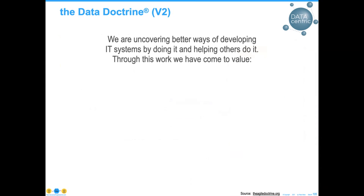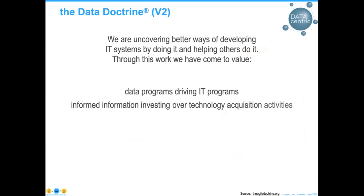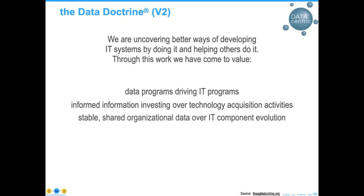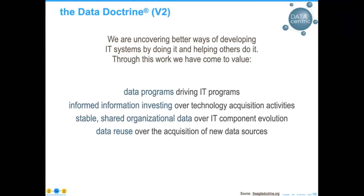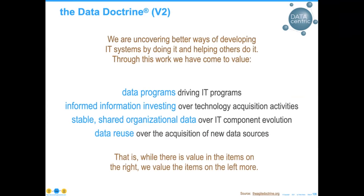When people say 'data first,' they need something that will give them some ideas. I've been working on a piece trademarked with the Patent and Trade Office — a variation of the Agile Manifesto. What should be going on? If you're going to do data first: data programs ought to drive IT programs; informed information investing should drive technology acquisition; stable shared organization data should precede component evaluation; and data reuse over acquisition of new sources. Those of you that remember the Agile doctrine — it's not that we don't value the things on the right, but the things on the left we value more.